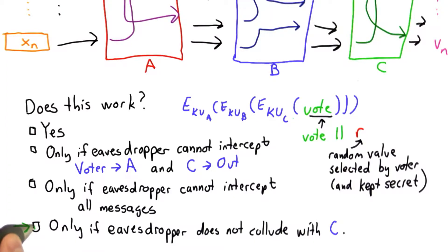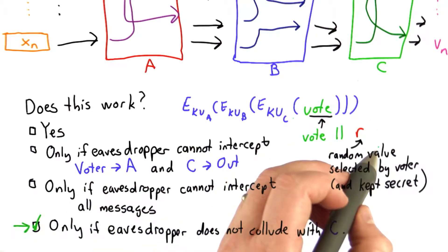The answer is the fourth choice. That this works at least against the attack that was described as long as the random value is kept secret.